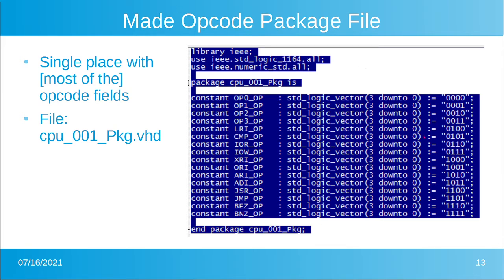We also created an opcode package file so that all opcodes can be defined in one place. The CPU itself will reference op0, op1, or whatever is needed. The reserved ones are just called op0, op1, op2. Opcode 3 has multiple uses so it isn't a single value and needs a more generic name of op3. These could also be defined as hex values — x"0" through x"F" — to make it a little cleaner and easier to read.